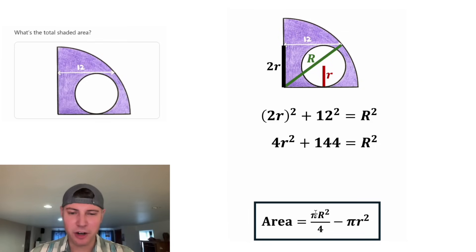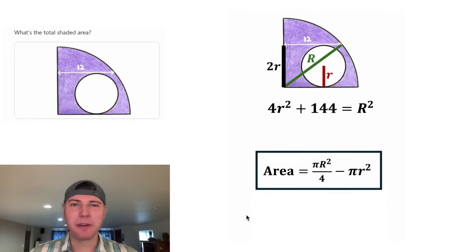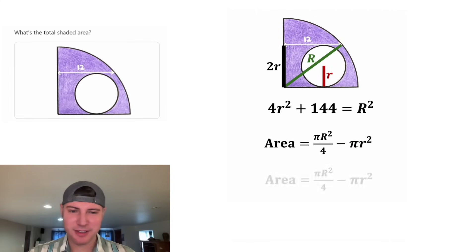And now I think we're done. We have a R² right here. So let's leave this isolated. Let's bring this up here and break it out of the box. Let's get the R² all by itself. And in the place of the R², let's plug in 4r² + 144.